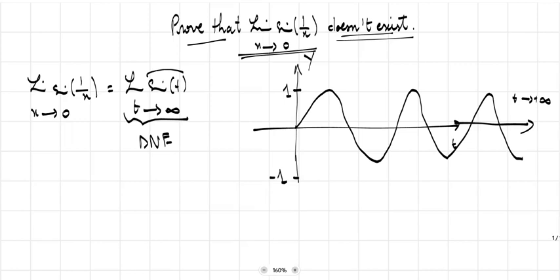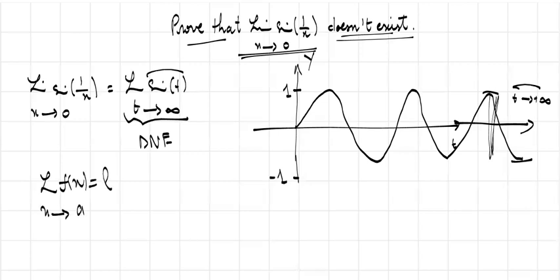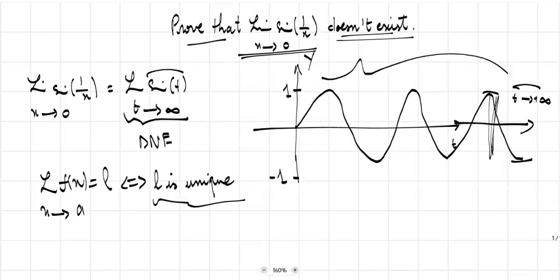When t approaches plus infinity, we cannot predict the behavior of this curve. The function sine t when t approaches plus infinity can be 1, can be minus 1, or can take a value between the two. The condition for the existence of a limit is that f(x) has a limit equal to L when x approaches a, meaning the limit L must be unique. Since sine t has no unique limit, this is the reason for the non-existence.